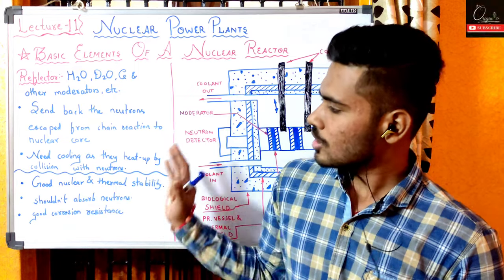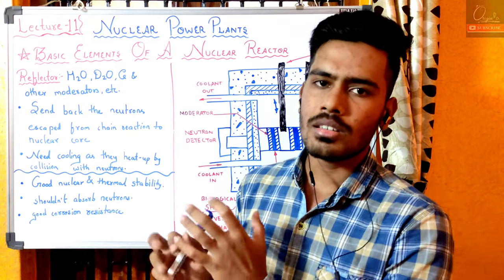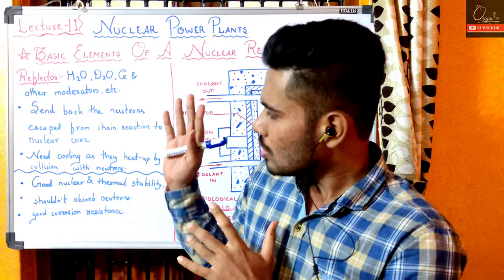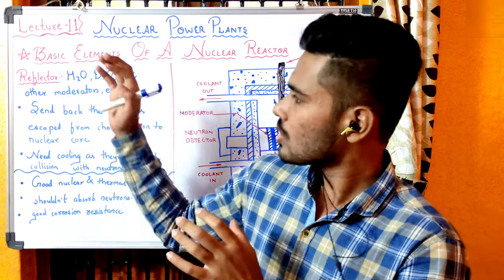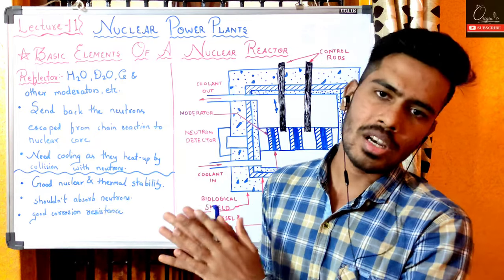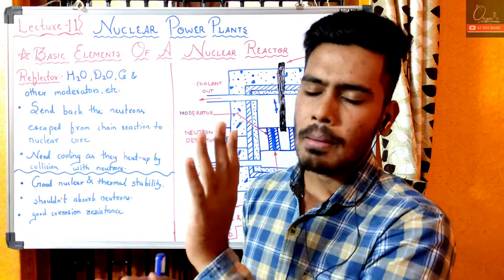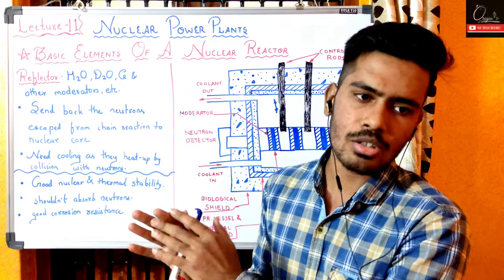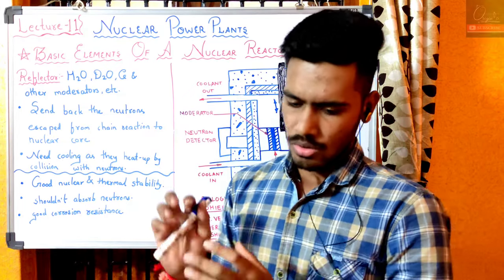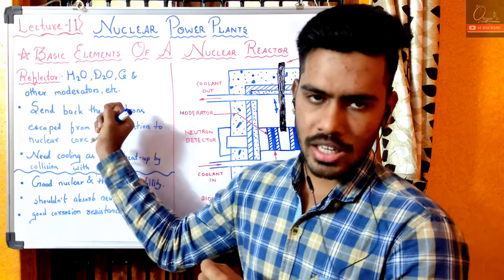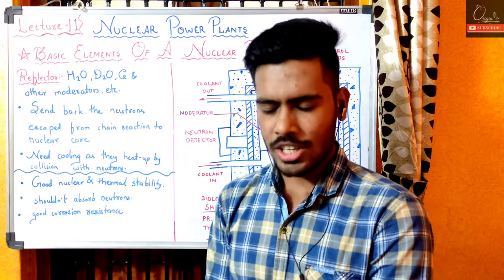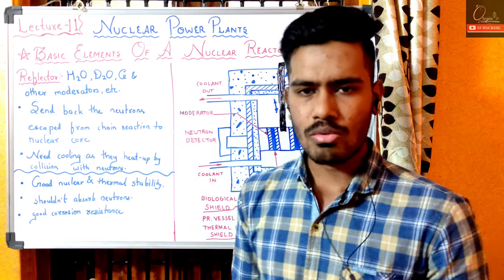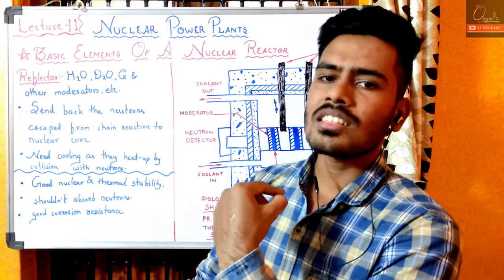Reflector में mechanism तो वही है कि speed कम करने के लिए elastic collision होगा molecules के बीच में। इस elastic collision के continuous होने से reflector भी गरम हो जाएगा। Coolant के साथ है तो वो heat absorb करके जाएगा, but in case material अलग है तो उसमें से heat release करनी पड़ेगी। Coolant को reflector के साथ भी contact में आके जाना पड़ेगा। Generally moderator, reflector, coolant तीनों एक ही material use होते हैं - water and heavy water।